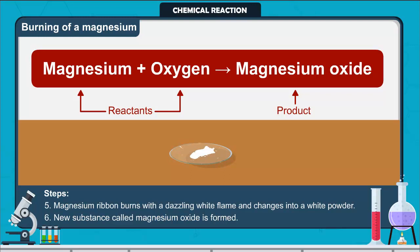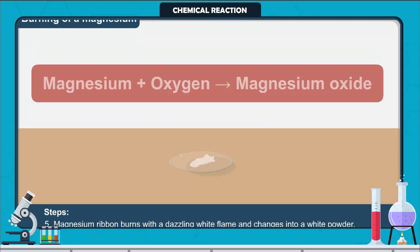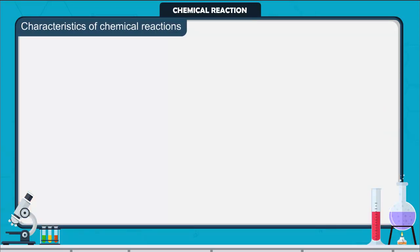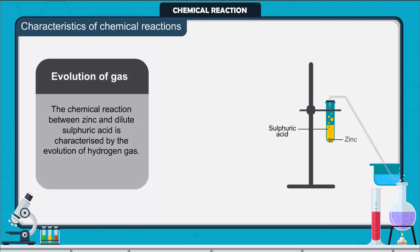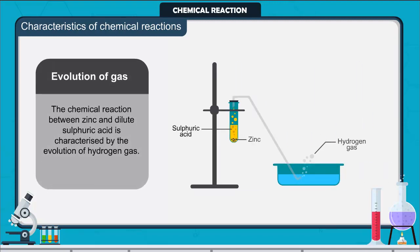Any of the following observations helps us to determine whether a chemical reaction has taken place. In other words, following observations are characteristics of chemical reactions. Evolution of gas: The chemical reaction between zinc and dilute sulfuric acid is characterized by the evolution of hydrogen gas.